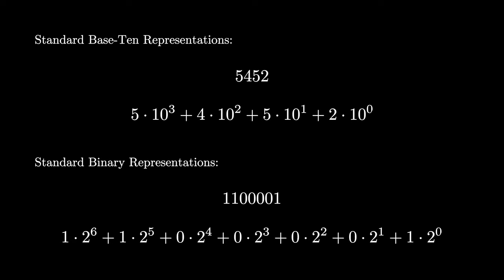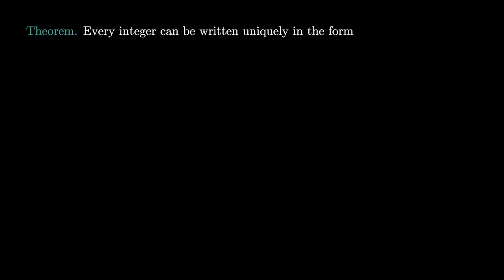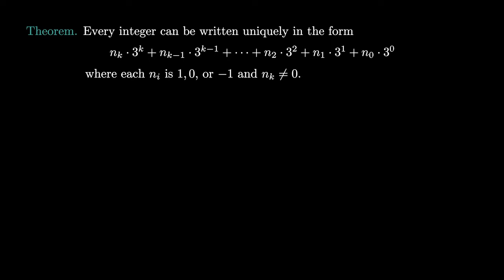You can do the same thing with any base b greater than 2, and other bases as well. But we want to focus on a related number system that's slightly different. To solve the coin weighing conundrum, we need the fact that every integer can be written uniquely as the sum of multiples of powers of 3, where each multiple is either 1, 0, or negative 1. More formally, n can be written in this form, where n sub i is 1, 0, or negative 1, and the most significant digit n sub k is non-zero.